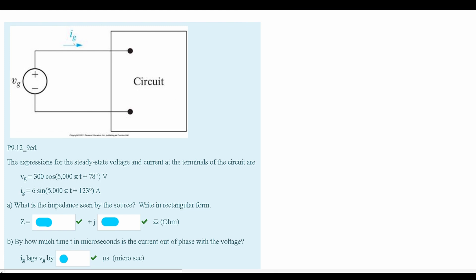In this problem, we are given the following circuit diagram, and we are told that the expressions for the steady state voltage and current at the terminals are Vg equals 300 cos(5000t + 78°) V and Ig equals 6 sin(5000t + 123°) A. We need to find the impedance seen by the source and write it in rectangular form.